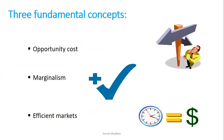There are three fundamental concepts in economics. The first one is opportunity cost. It is defined as the best alternative we forego when we make a choice or decision.